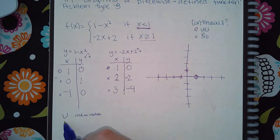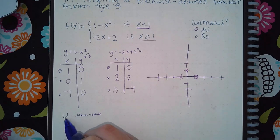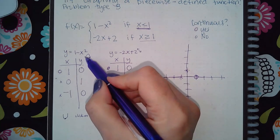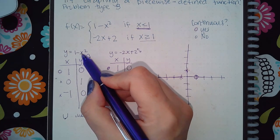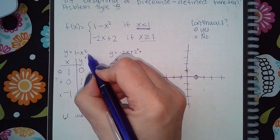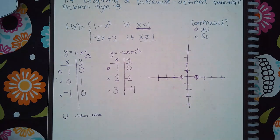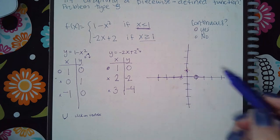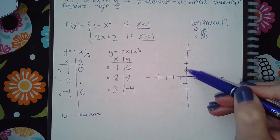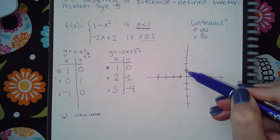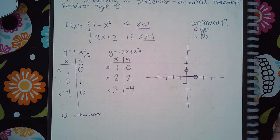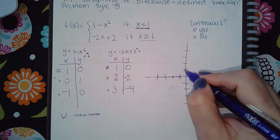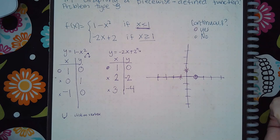If the parabola opens upward, the vertex is at the bottom. If it opens downward — which mine does — the vertex is the peak at the top. Since mine opens downward, the first point I click is that peak, which is the vertex of the parabola.